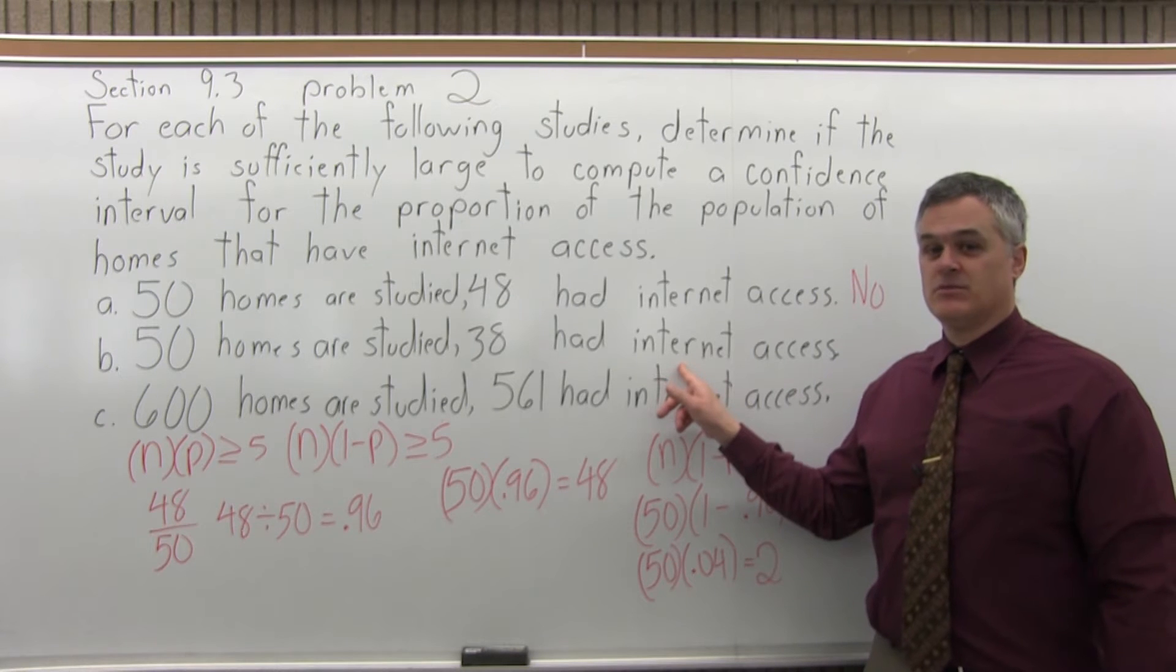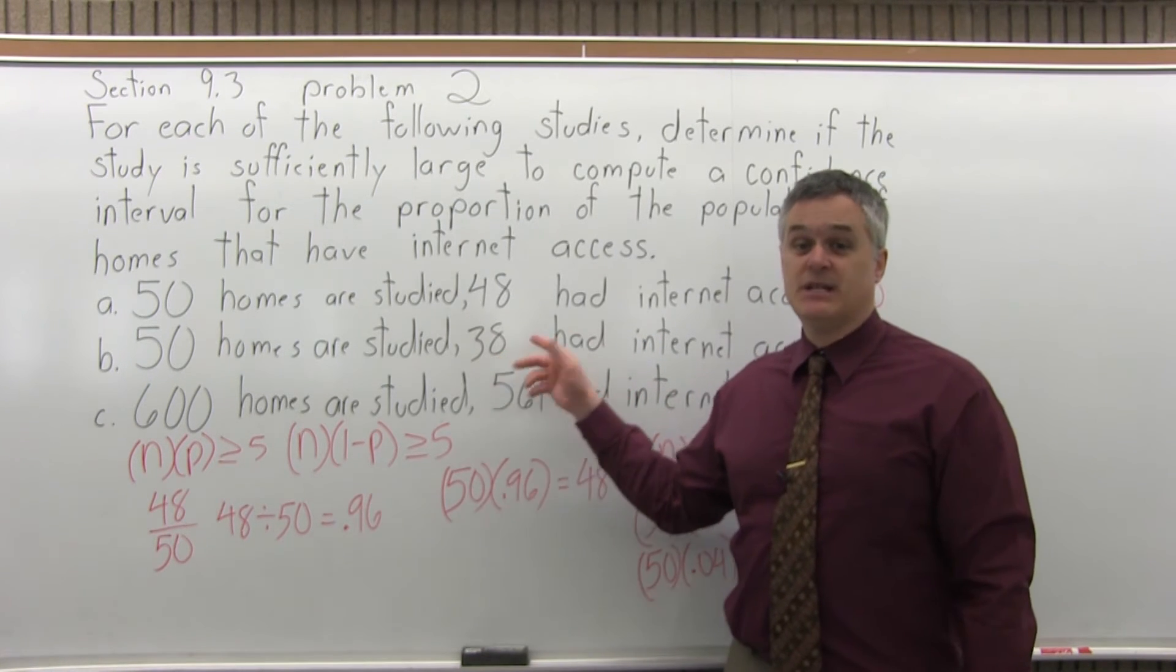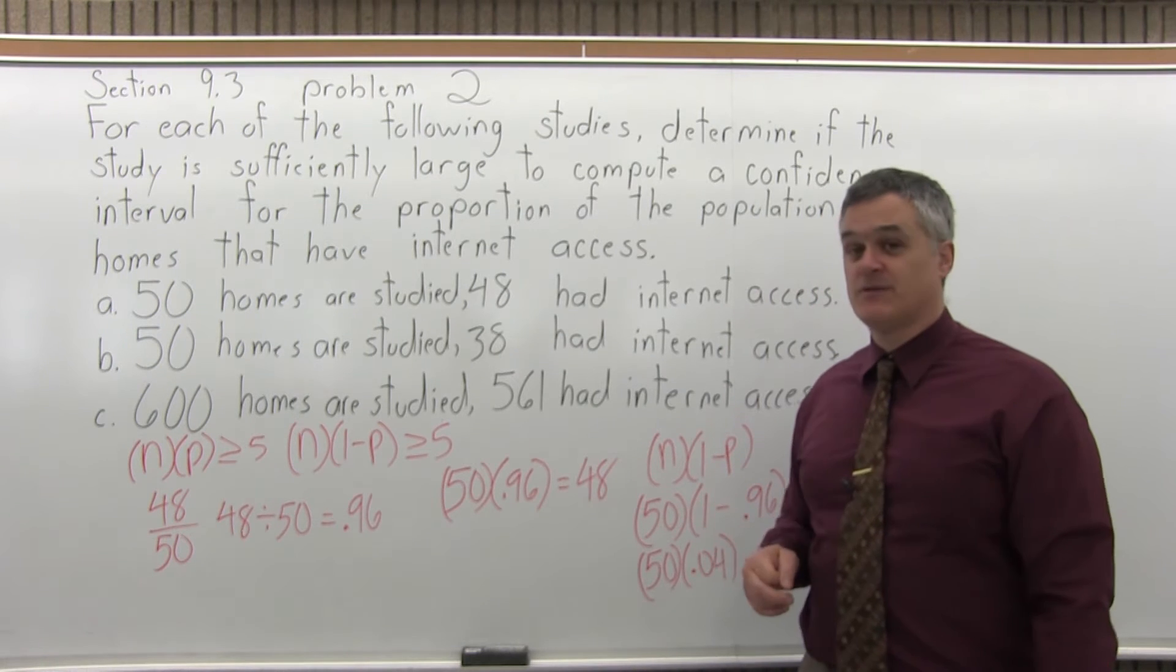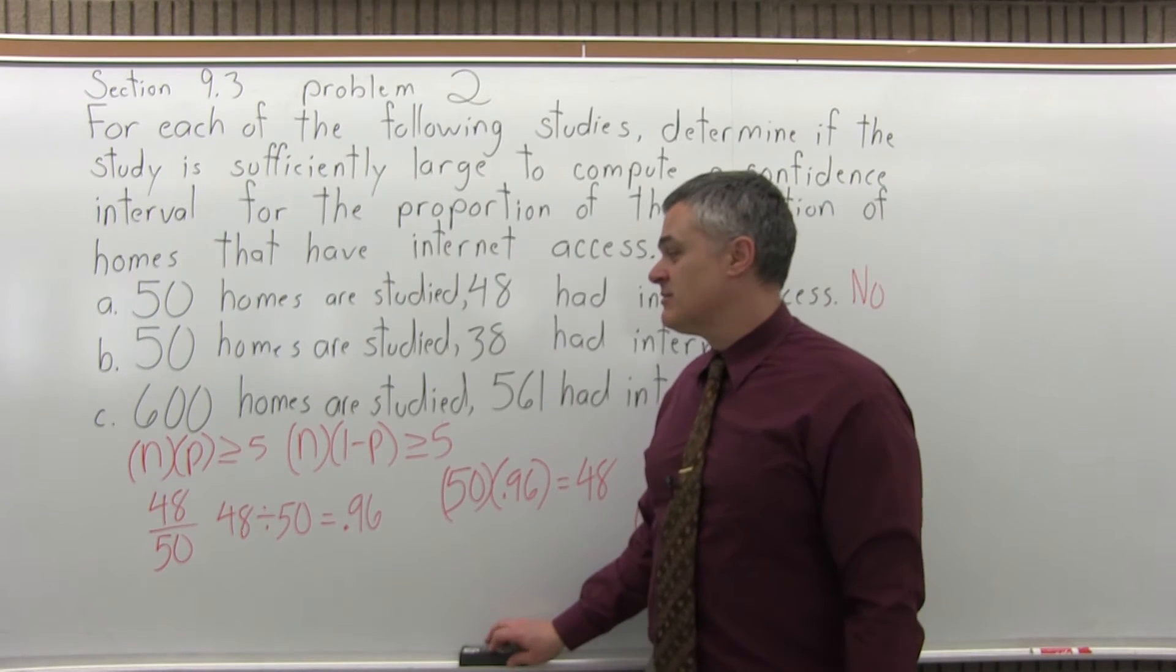Now, b is really similar. 50 homes are studied. 38 of those 50 homes did have internet access. Will this be sufficiently large? It's still 50 homes. So, it's not just how many homes are studied. So, let's check the same thing.